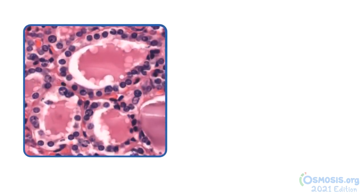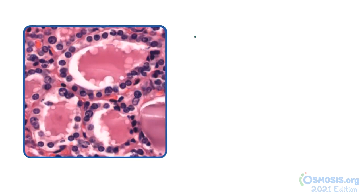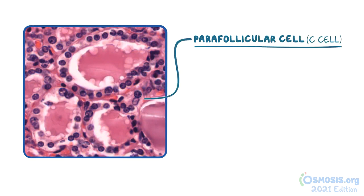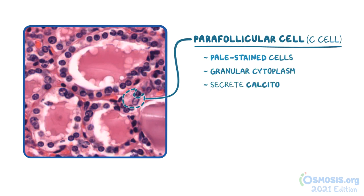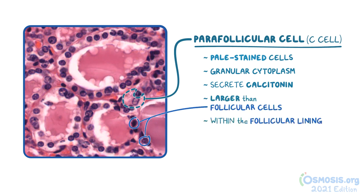Still at 40x magnification, this image has an example of a parafollicular cell, also called a C cell, near the center. These pale-stained cells have a granular cytoplasm and are responsible for secreting calcitonin. They're larger than follicular cells, but there are fewer of them. They can usually be found in the periphery within the follicular lining or in the interstitial space between follicles. Because they don't absorb a lot of the H&E stain, they can be difficult to identify.